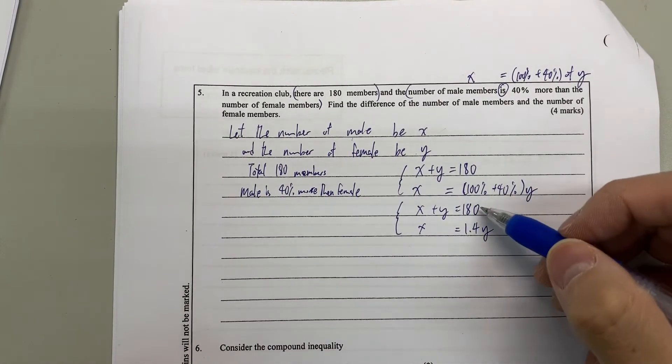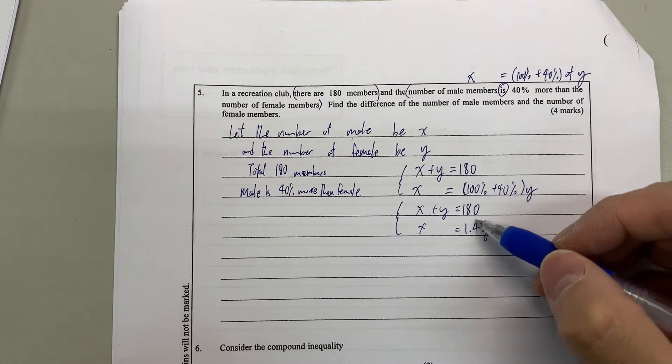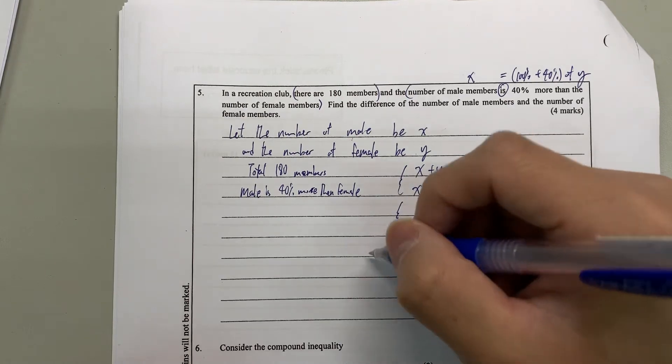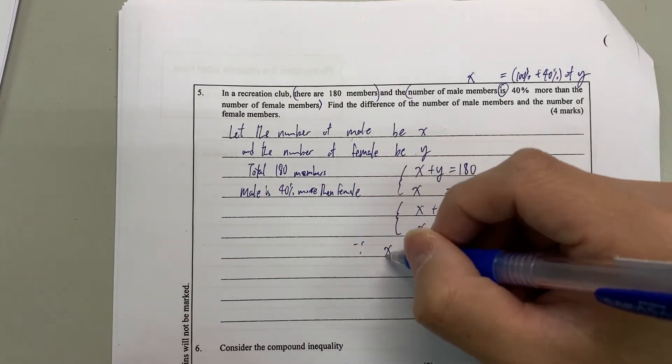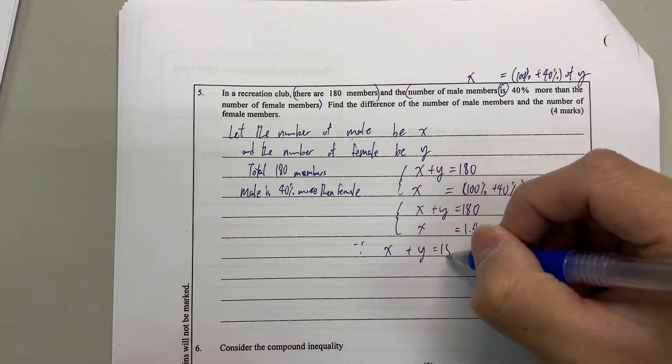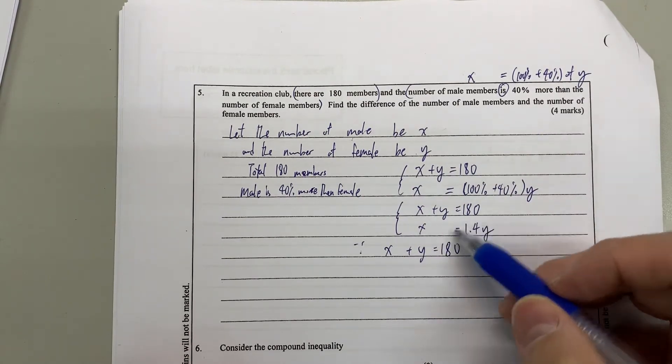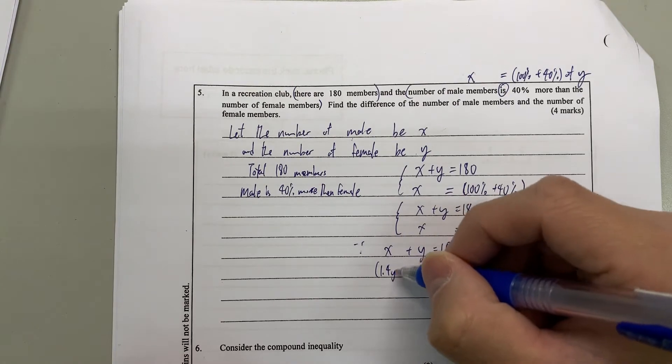So it makes it much easier to handle because we make x the subject already. So from the first one, since x plus y equals 180, we know x we can express in terms of y. So I replace x by 1.4y.